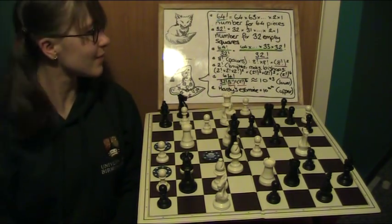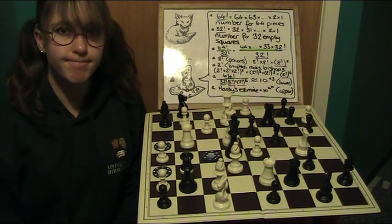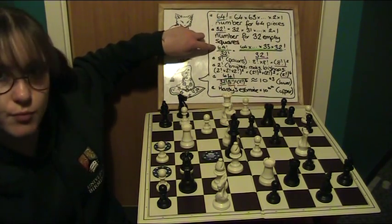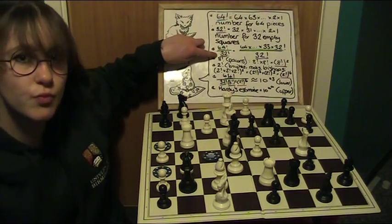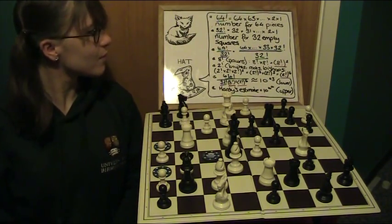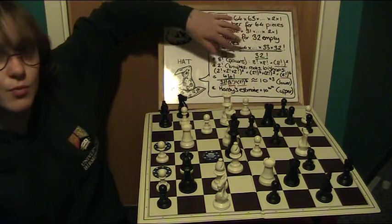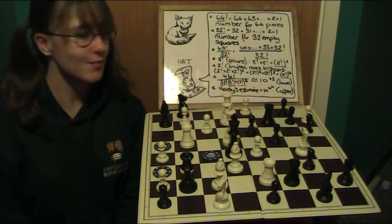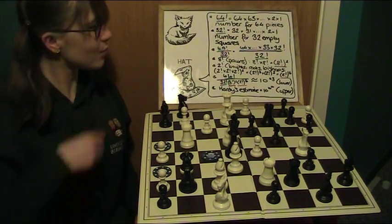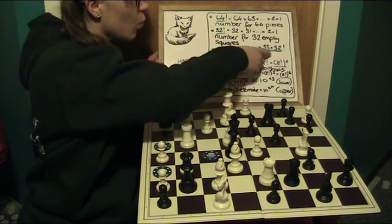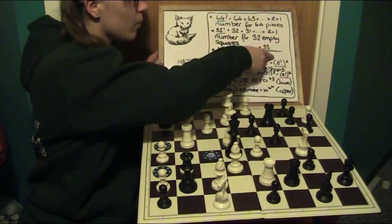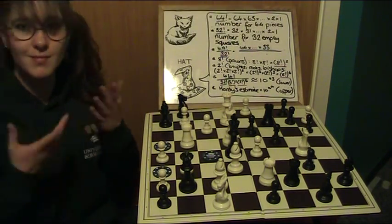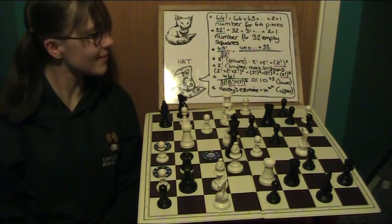However, we are only interested in the number of ways of placing our 32 chess pieces. So we must divide the number of ways of placing 64 chess pieces on all of the squares by the number of empty squares, 32 factorial. Then we can rewrite this fraction by expanding the numerator, the top, until you get to 32 factorial. And then we can cancel or divide both the numerator and the denominator by 32 factorial to get 64 times 63 all the way down to times 33. Or rather, the number of ways of placing 32 unique pieces.